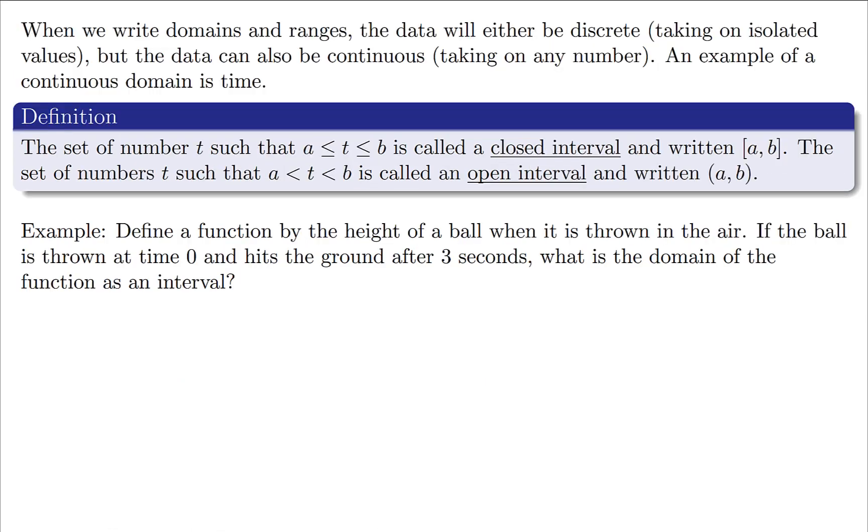When we talk about domain and range, in this example we had what we call discrete data where it takes on isolated values. But you can also have continuous data where it can take on really any value whatsoever. Time is often a good example because time flows in a continuum. Sure you could say one second, two seconds, three seconds, but remember that time does not just get measured in single seconds. We can really break it down into as small of time intervals as we want.